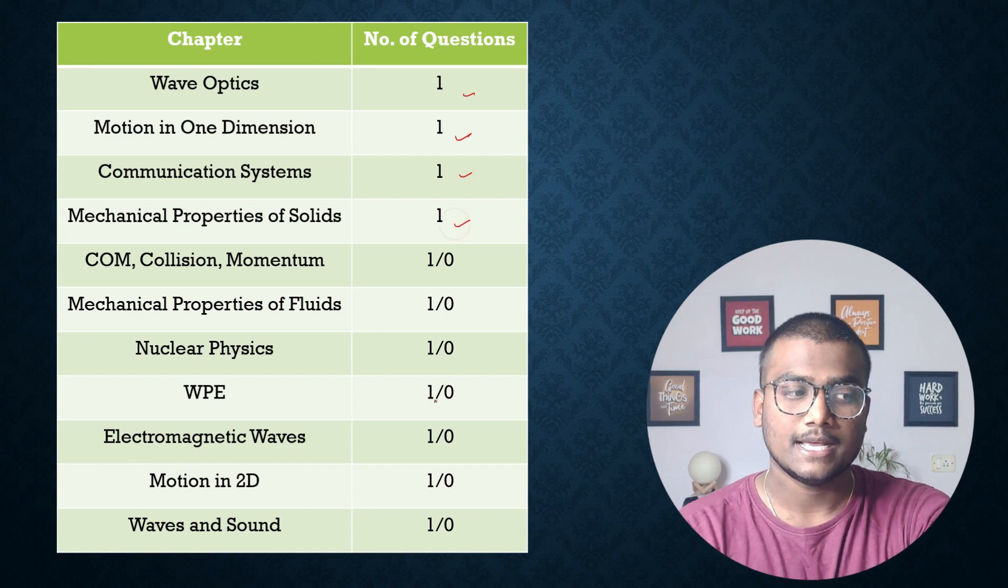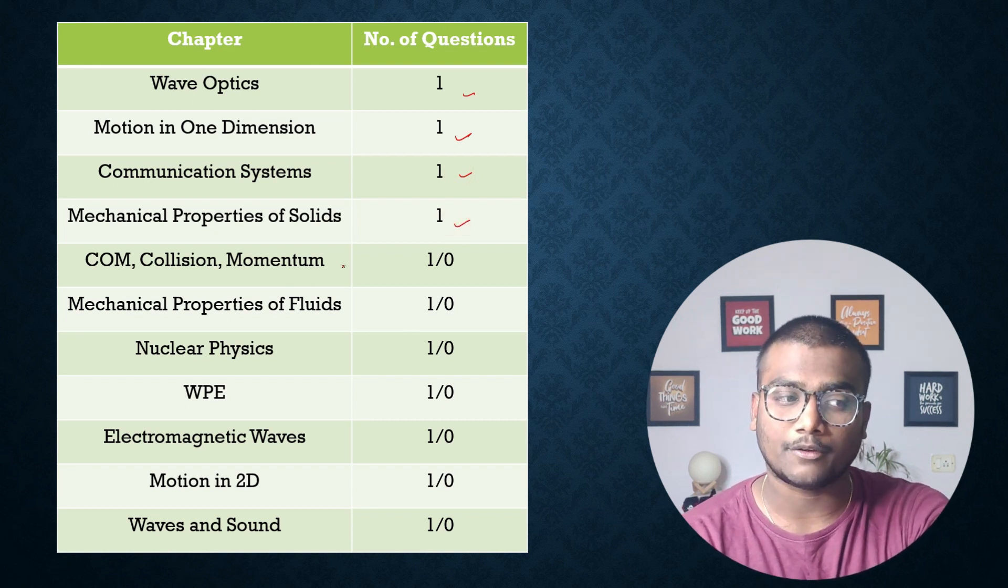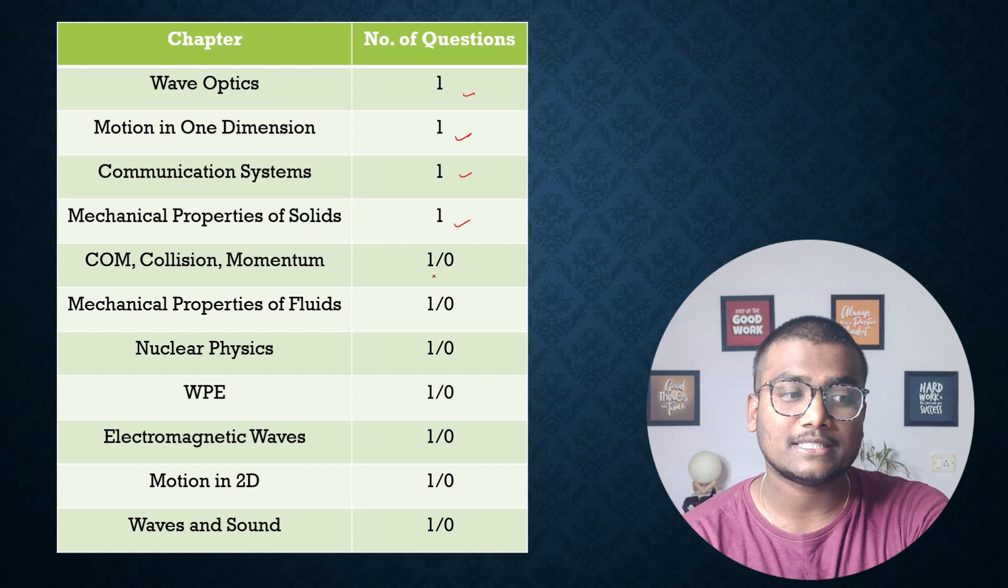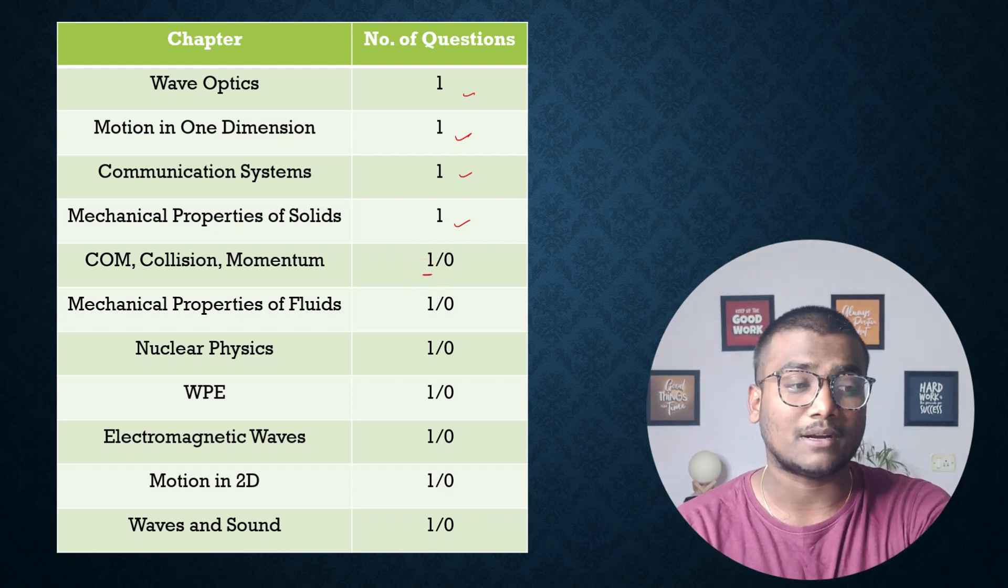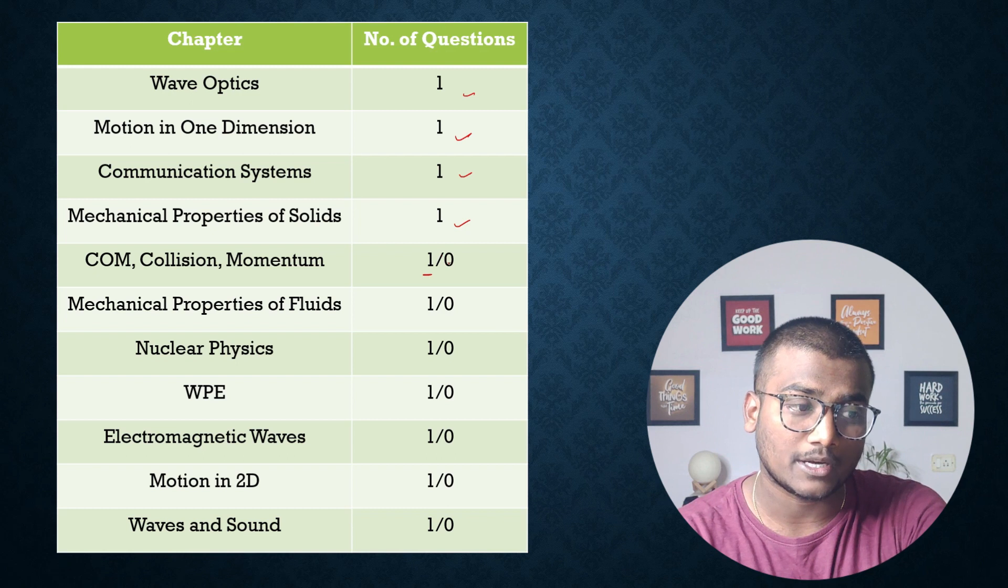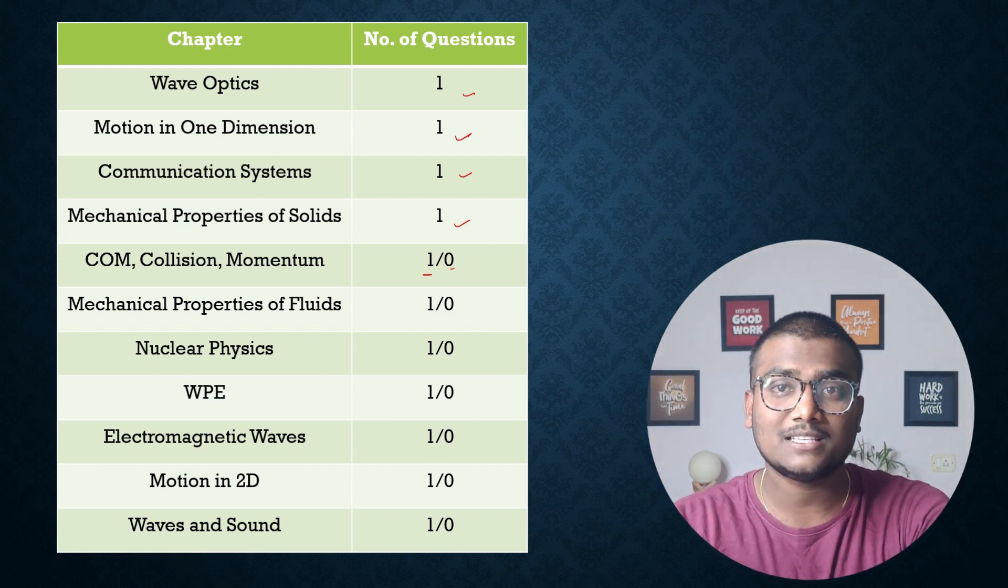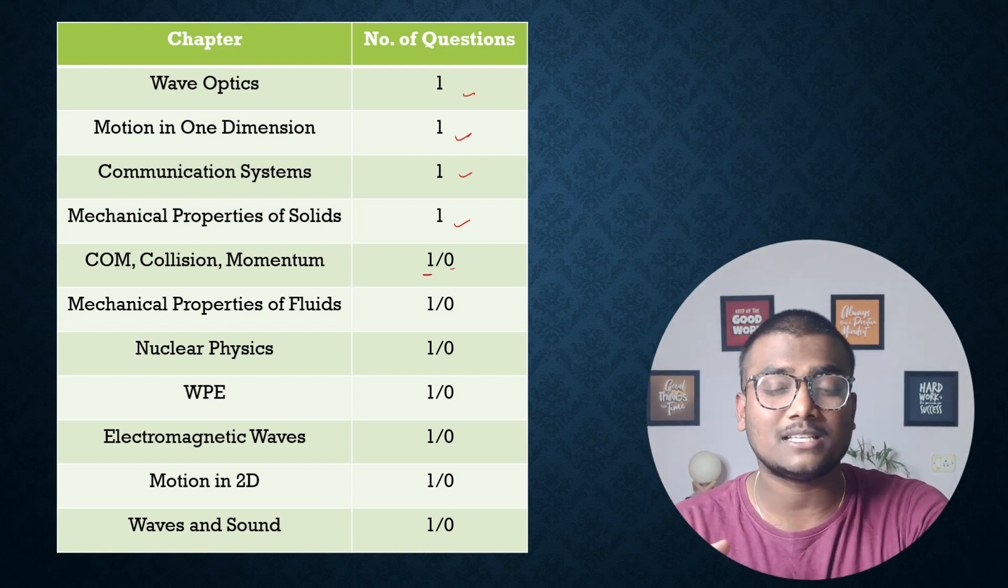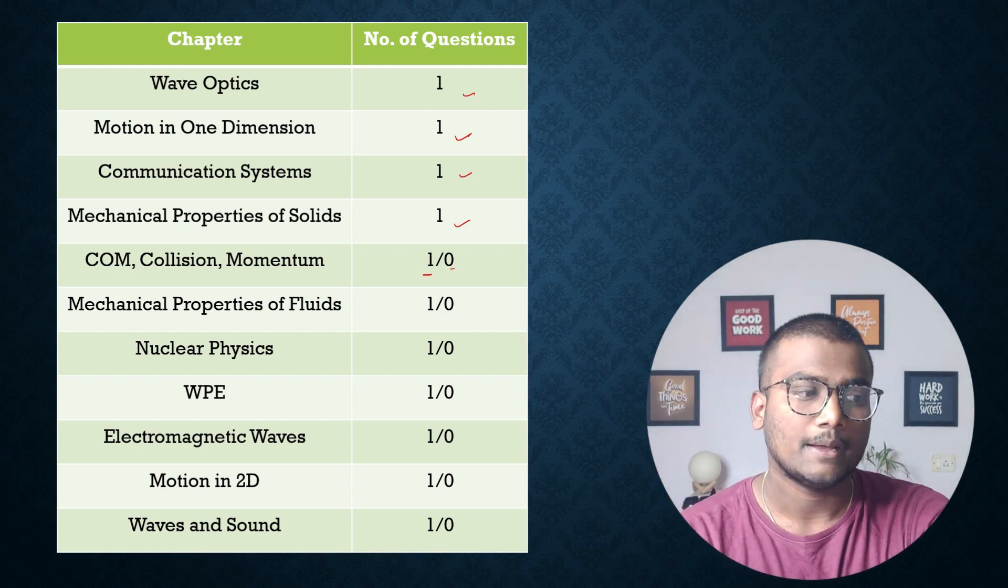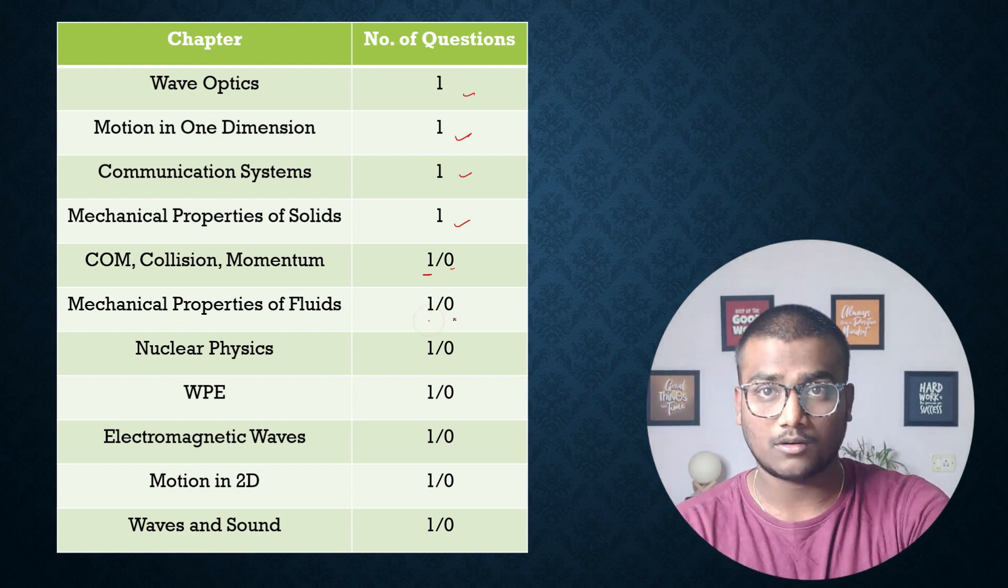From Center of Mass, Collision, and Momentum combined, you can expect one, but there's also a chance you won't get any question. One slash zero means there might be some chance you won't get any question from that topic. Mechanical Properties of Fluids: one or none.